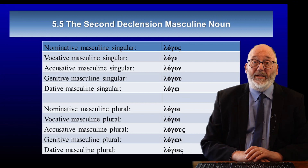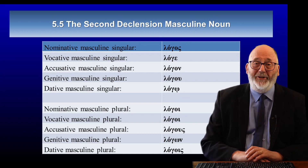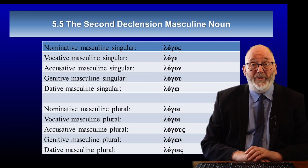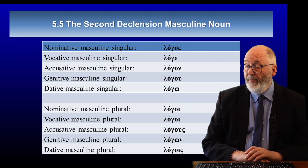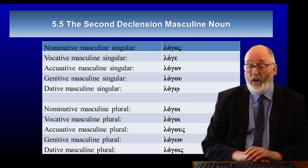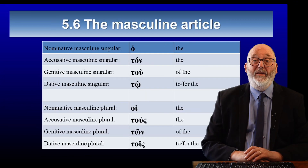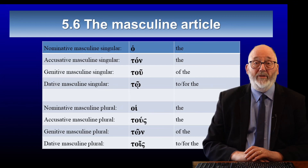You may already know the declension of the second declension masculine noun, logos. If you don't, here's a good moment to learn it, and you would want to know it really well. As you can see, the genitive masculine singular of logos is logou, and the genitive masculine plural of logos is logōn. And there is a corresponding article for the masculine genitive singular, tou, or the genitive masculine plural, tōn.